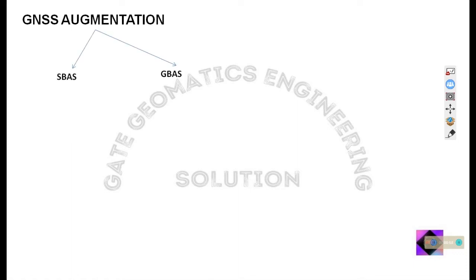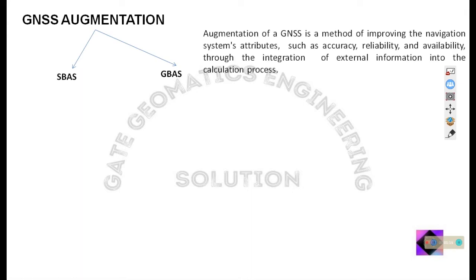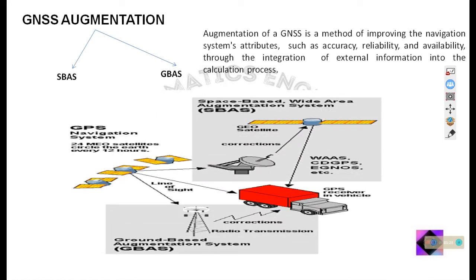The types of GNSS augmentation systems are S-BAS system and G-BAS system. S-BAS means the satellite based augmentation system and G-BAS is the ground based augmentation system. This is the basic structure of GNSS augmentation, with two types: one is S-BAS and another one is G-BAS.